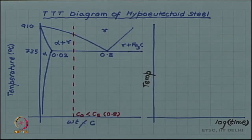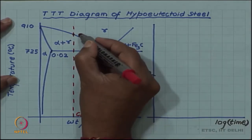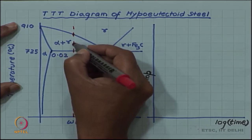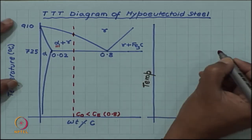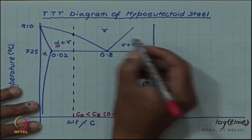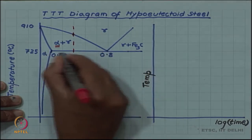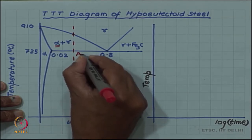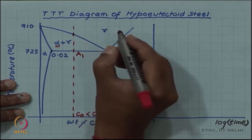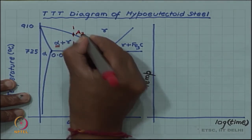For this composition, the equilibrium transformation happens at the eutectoid temperature and also at the temperature where gamma starts transforming to alpha. As we cool along this line, we move from single-phase gamma into alpha plus gamma, which means alpha starts precipitating — we call this alpha the pro-eutectoid alpha. In steel literature, the eutectoid temperature is labeled A₁, and the temperature where the composition vertical hits the gamma/alpha+gamma boundary is known as A₃.